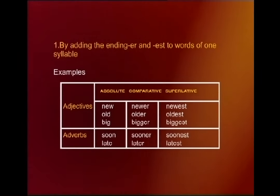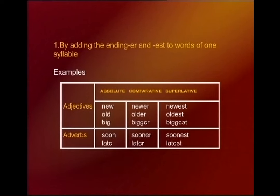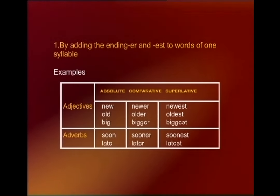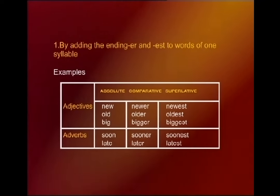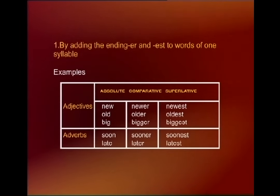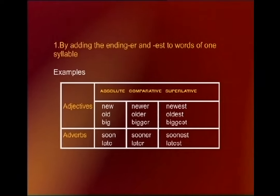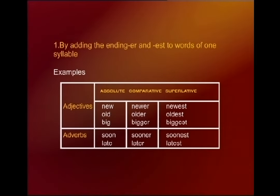We usually add -er or -est to words of one syllable. For example, take the adjective 'new' — this is the absolute form. By showing comparison, you add -er for the comparative degree, and -est for the superlative degree. So it is: new, newer, newest; old, older, oldest; big, bigger, biggest.